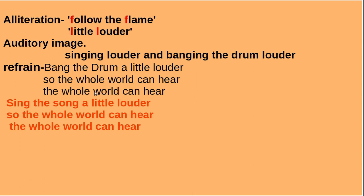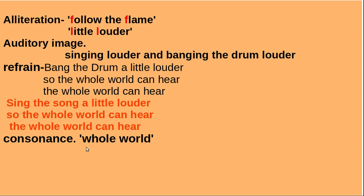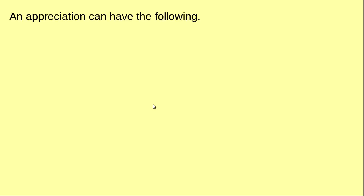The lines 'so the whole world can hear' repeat as a refrain throughout the song. The refrain means a line or lines which repeat throughout the poem. An example of consonance is 'whole world' — here the repeated sound is not at the beginning of words but within them, which distinguishes it from alliteration. A simile in the song is 'run like the wind.'